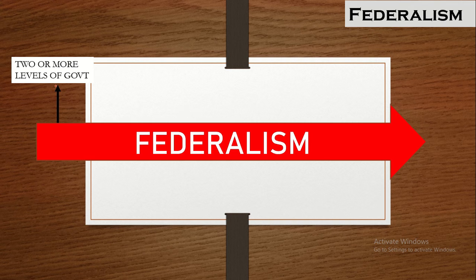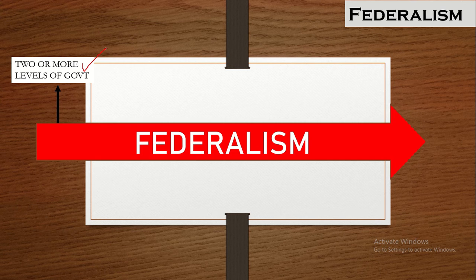The first feature of federalism is there should be two or more levels of governments. There should be two or more levels of governments in order to make a division of power between the center and the states.